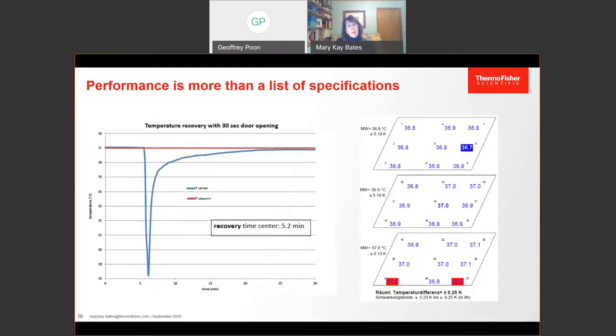When thinking about performance, remember that it's more than just a list of specifications. If you're looking at an incubator, for example, it's not just about what's the accuracy of the sensors, but how do those sensors perform in real life? What is the recovery after a door opening or what is the uniformity in that incubator? What's the deviation in temperature from the top shelf to the bottom shelf, for example? You should be able to have these sorts of data as well.